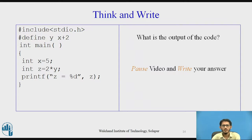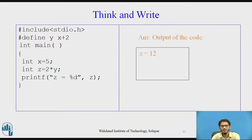Now students are expected to think and write the answer to the following question: what will be the output of the code? Pause the video and write your answer. The answer is 12. We know Y is a macro replaced at pre-processing with its expansion x+2. So z = 2 * x+2, meaning 2 multiplied by x, then plus 2. Since x is 5: 2*5 = 10, plus 2 = 12. Therefore the output value of z is 12.